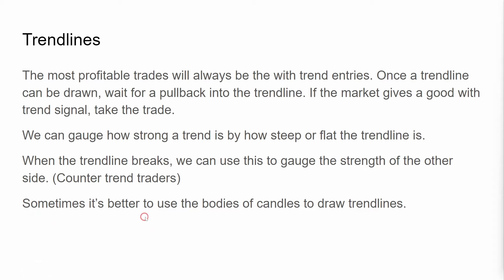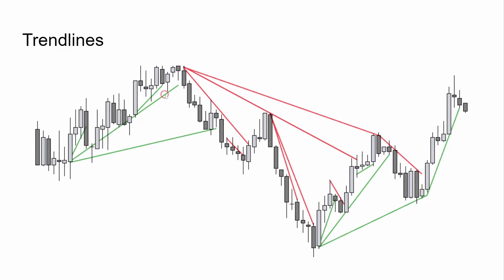Sometimes it's better to use the bodies of the candles to draw trend lines. Here's an example of multiple trend lines. We have broad bull trend lines here and here, and within that we have micro trend lines that ultimately break with steep bear trend lines. Here's a micro trend line for the bears contained within a broader trend line for the bears.